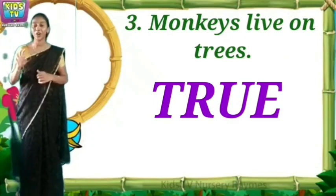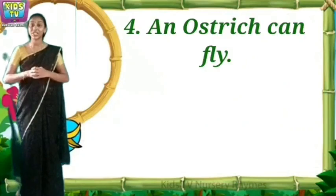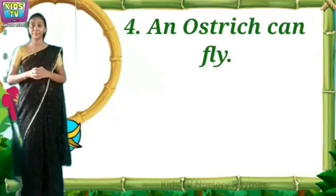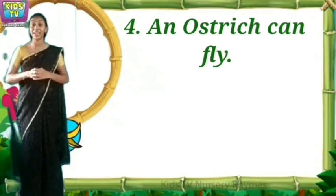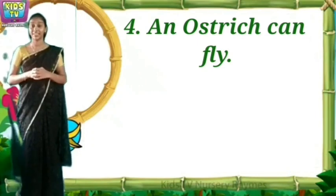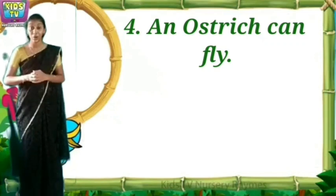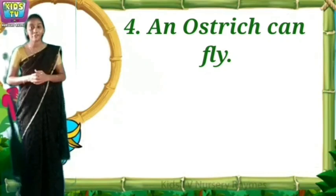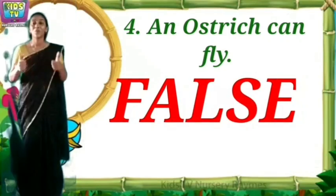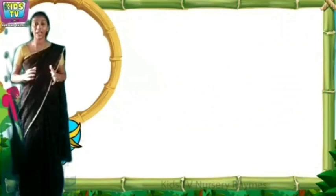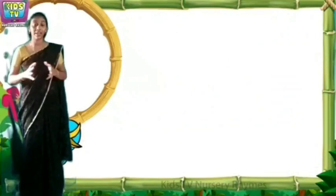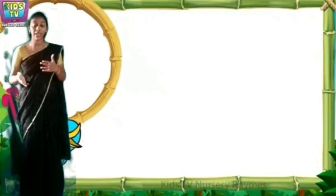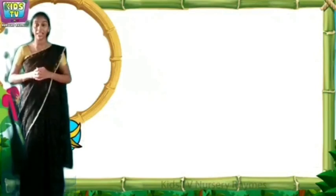The fourth question: an ostrich can fly. No — an ostrich cannot fly, so the answer is false. Well done, children! I think you are clear about the animals, where they live, and the types of animals. Shall we just recall everything now?